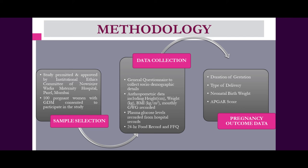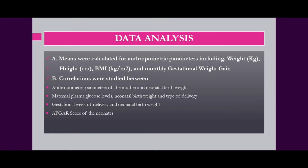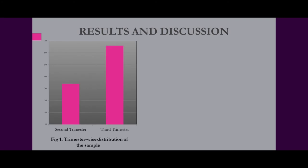Pregnancy outcome was assessed using parameters like duration of gestation, type of delivery — whether normal delivery, caesarean section, or forceps delivery — neonatal birth weight as one of the most important indicators, and APGAR score at 5 minutes after birth. The data was analyzed using means for anthropometric parameters — weight, height, BMI, and monthly gestational weight gain. Correlations were studied between maternal parameters and pregnancy outcomes: anthropometric parameters versus neonatal birth weight, maternal plasma glucose levels versus neonatal birth weight, type of delivery, gestational week of delivery, and APGAR score.